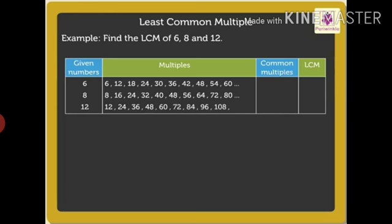Here the common multiples of 6, 8, and 12 are 24, 48, and so on. Thus, the LCM is 24. Now kids, I am sure all of you must be wondering why we did not list 0 as a multiple for any of the numbers.